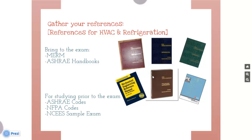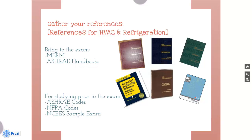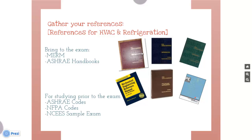Once you have downloaded your NCEES outline, the next step is to gather your references. For the HVAC and refrigeration topic, the following references are recommended: the Mechanical Engineering Reference Manual, the various ASHRAE handbooks like ASHRAE Fundamentals, ASHRAE Refrigeration, ASHRAE Systems and Equipment, and ASHRAE HVAC Applications. For studying prior to the exam, it is also recommended to review relevant ASHRAE codes and NFPA codes, and to complete the NCEES sample exam.